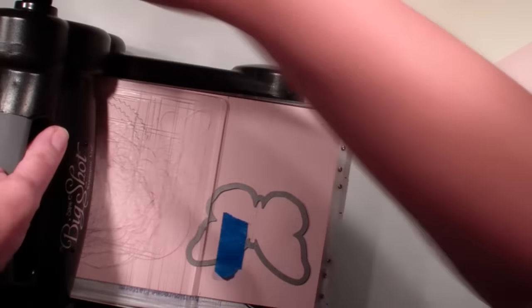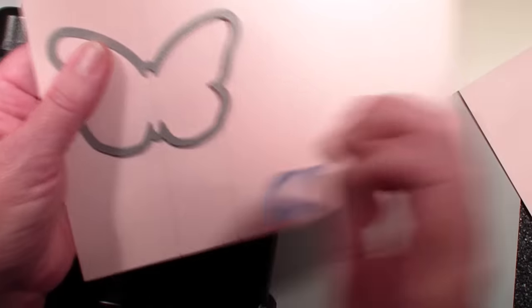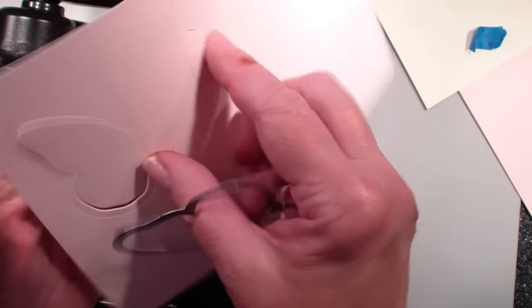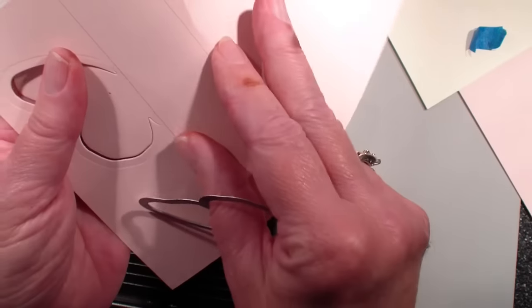It's kind of hard when you're on a mat. It wants to slide on me here. When I pull that off, I just have the cutting to the line where I have my score line.